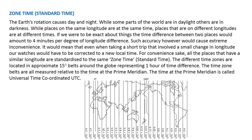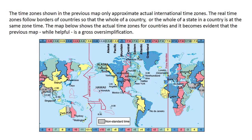The time zone belts are all measured relative to the time at the prime meridian. The time at the prime meridian is called Universal Time Coordinated, or UTC. The time zones shown in the previous map are theoretical and approximate actual international time zones. The real time zones follow the borders of countries, so that the whole of a country, or the whole of a state in a country, is all at the same time.